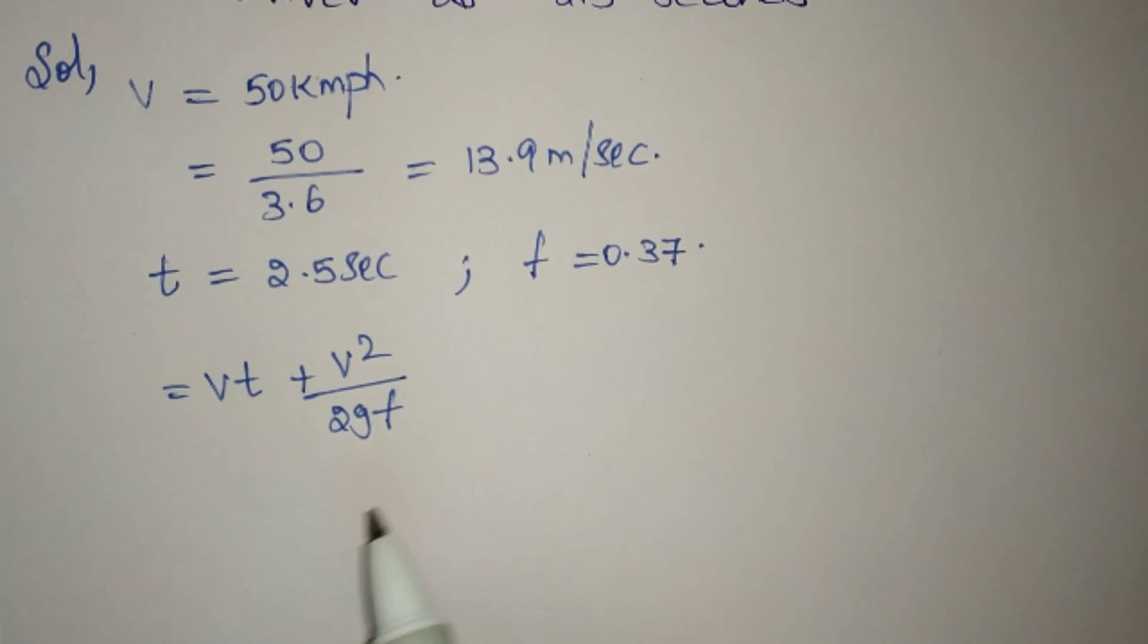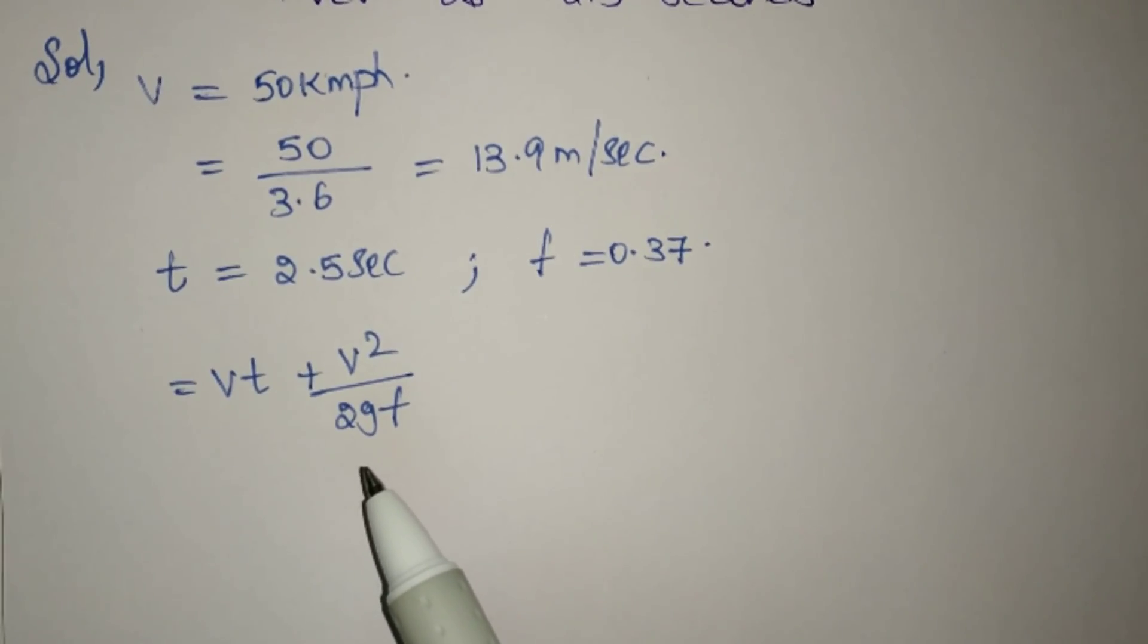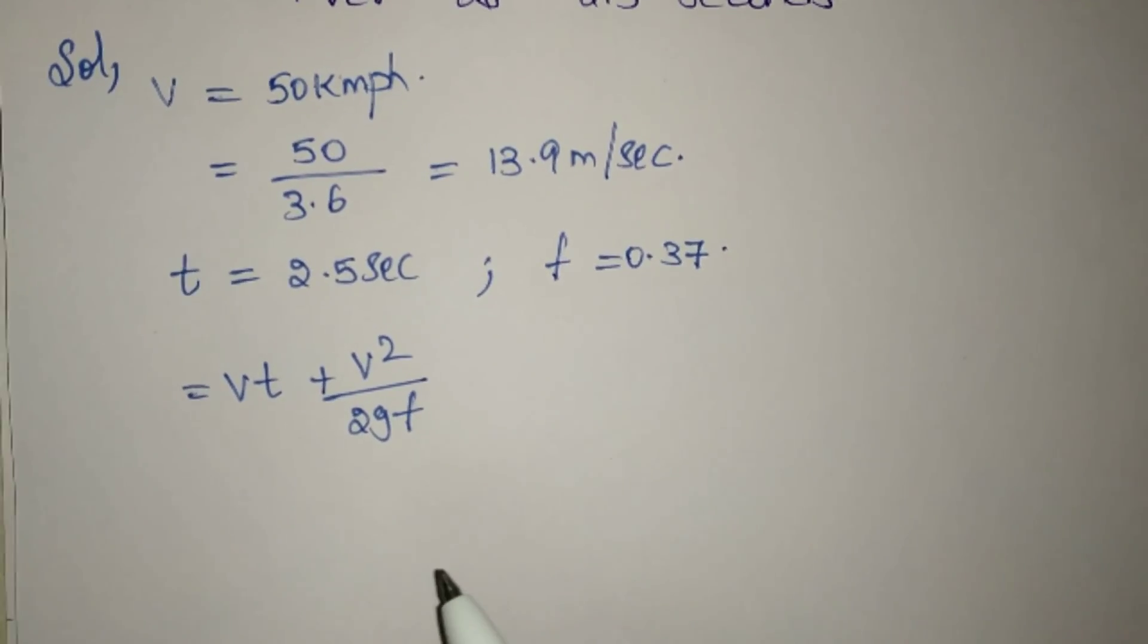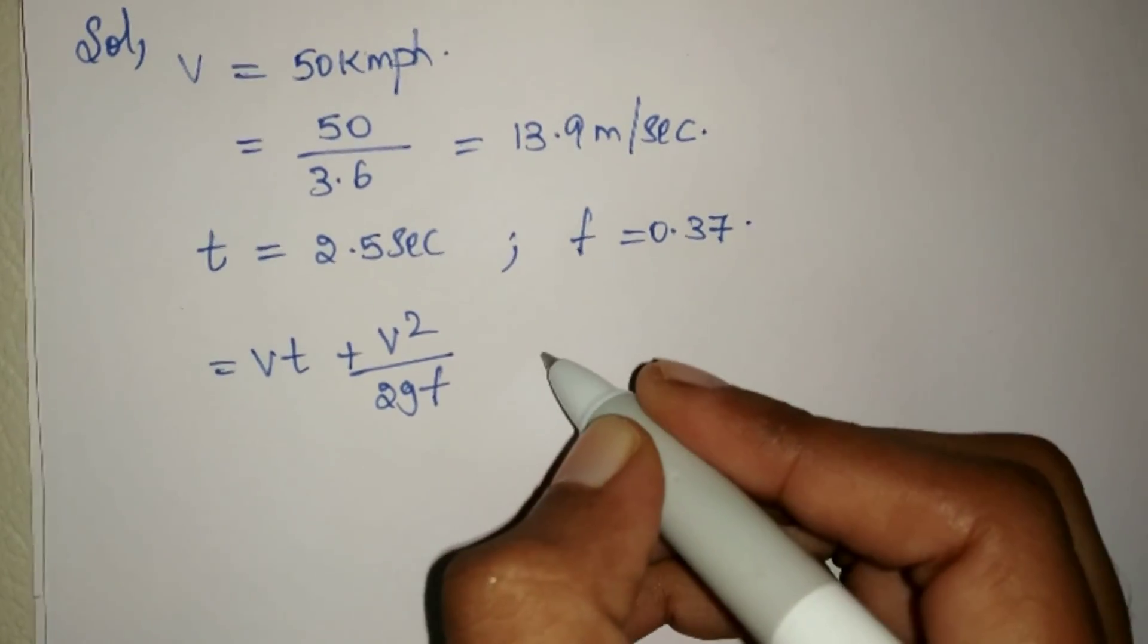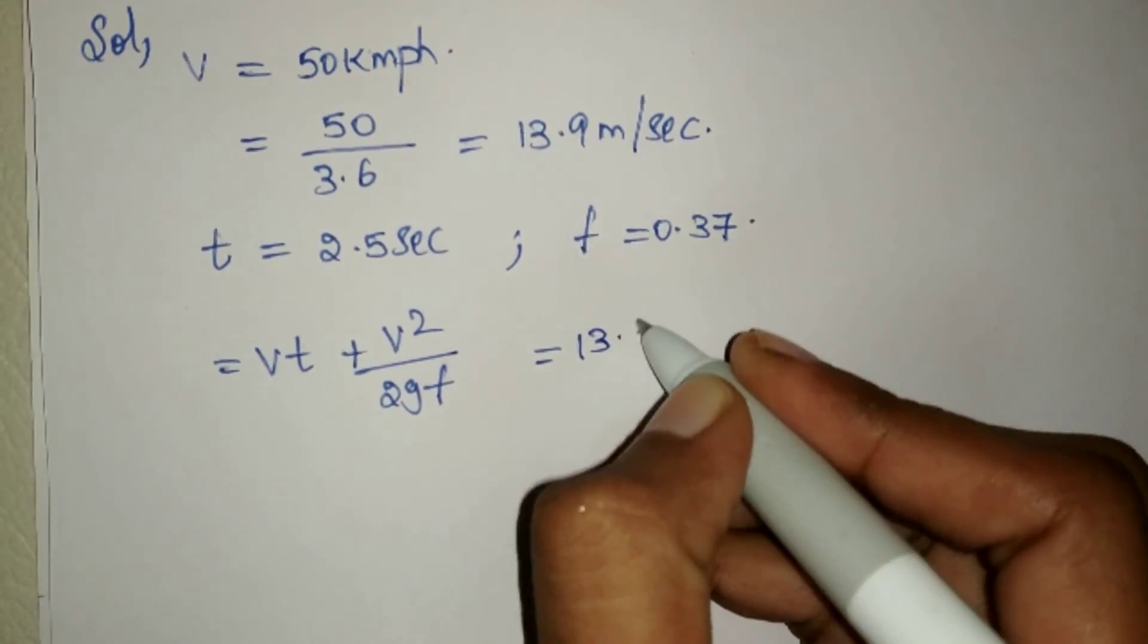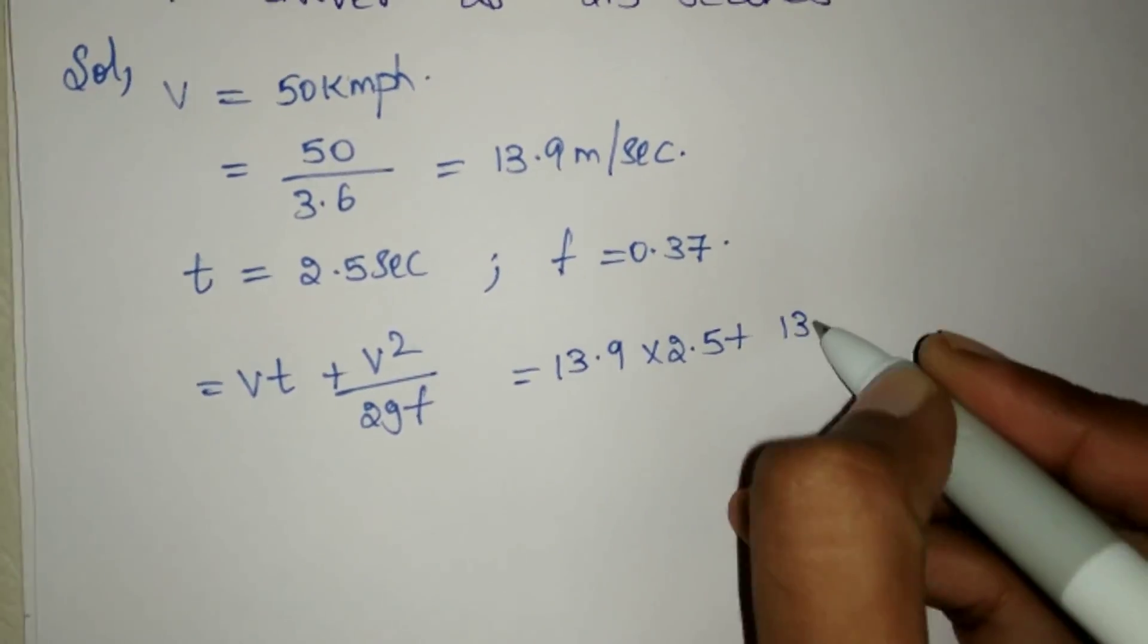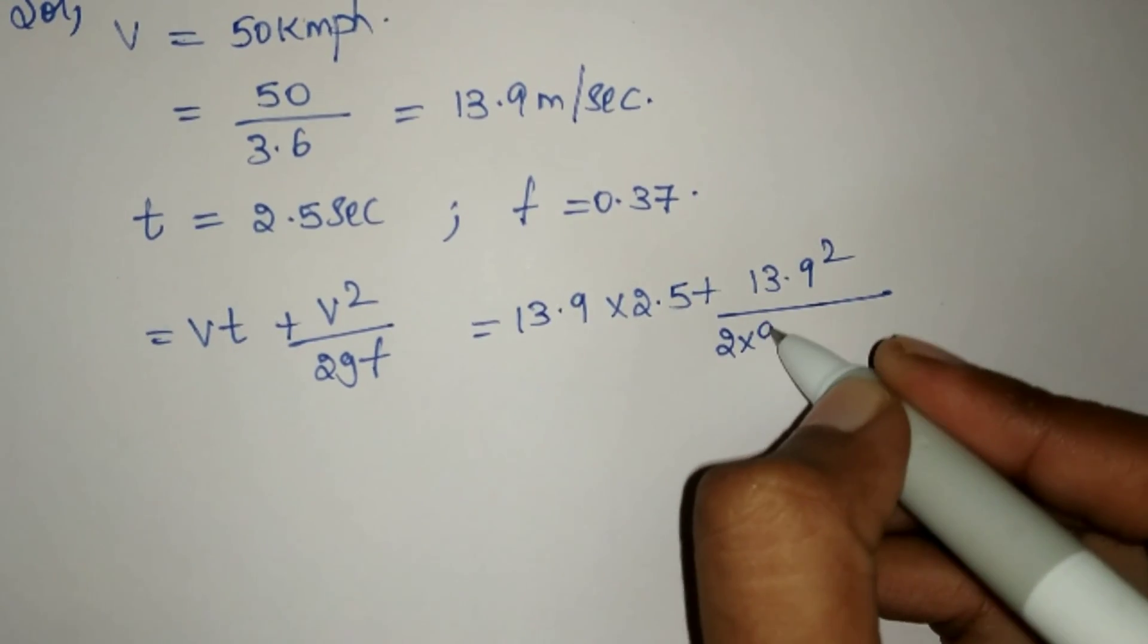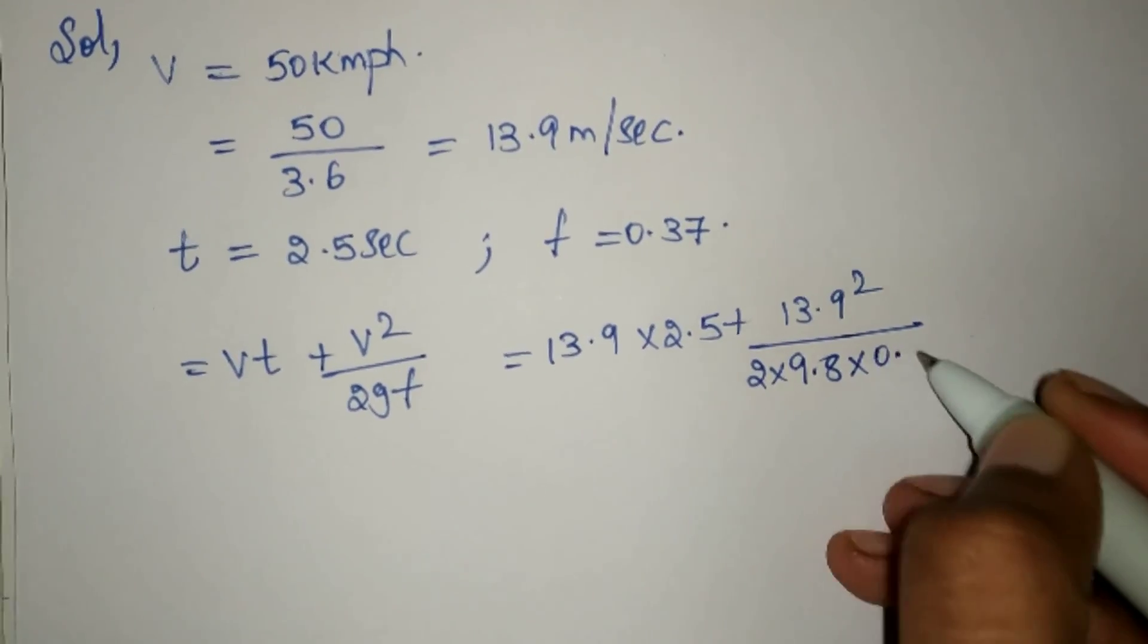After you apply the brake, by substituting values: 13.9 times 2.5 plus 13.9 squared by 2 times 9.8 times 0.37.